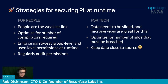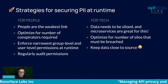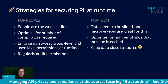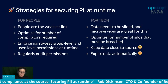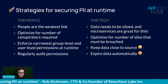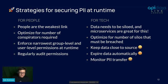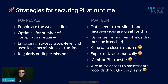For quick tactical steps: keep data close to the source — transferring data to third parties is getting harder every year, so keep it close to the jurisdiction where the API lives. Expire data automatically — don't rely on humans; build in policies where data automatically rolls off. Monitor your PII transfer — systems like Resurface can help you know where that PII is going and flowing, which is hugely important for real observability.